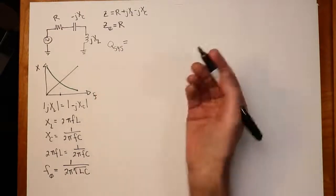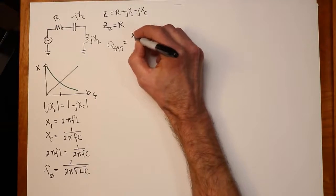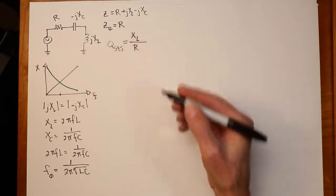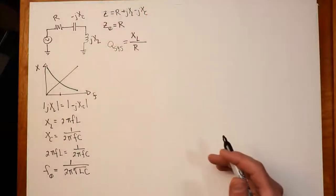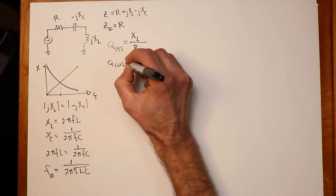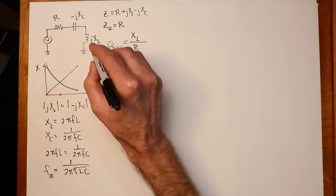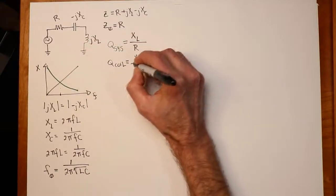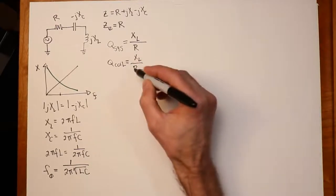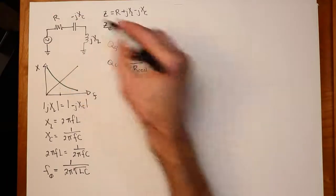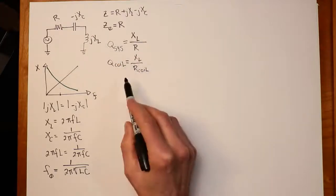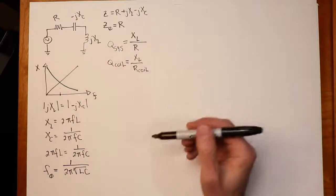There's a lot of friction in that system. In an electrical system, there would appropriately be some resistance associated. But, in any case, Q system is defined in terms of the ratio of Xl to R. Obviously, the bigger Xl is at the resonant frequency than the higher the system Q is. Now, you can compare that to the Q of the coil itself. This inductor has its own Q, which is Xl over Rcoil. Obviously, because Rcoil is part of the total resistance, total resistance has to be at least as big as Rcoil. So, Q system can never be bigger than Q coil. Q coil sets the Q of the entire system.